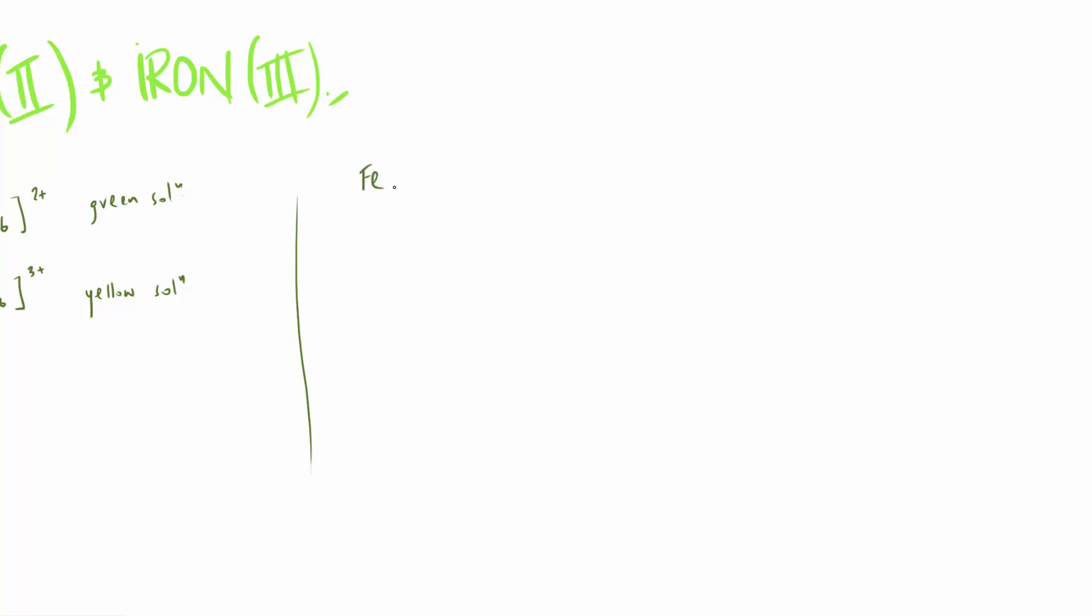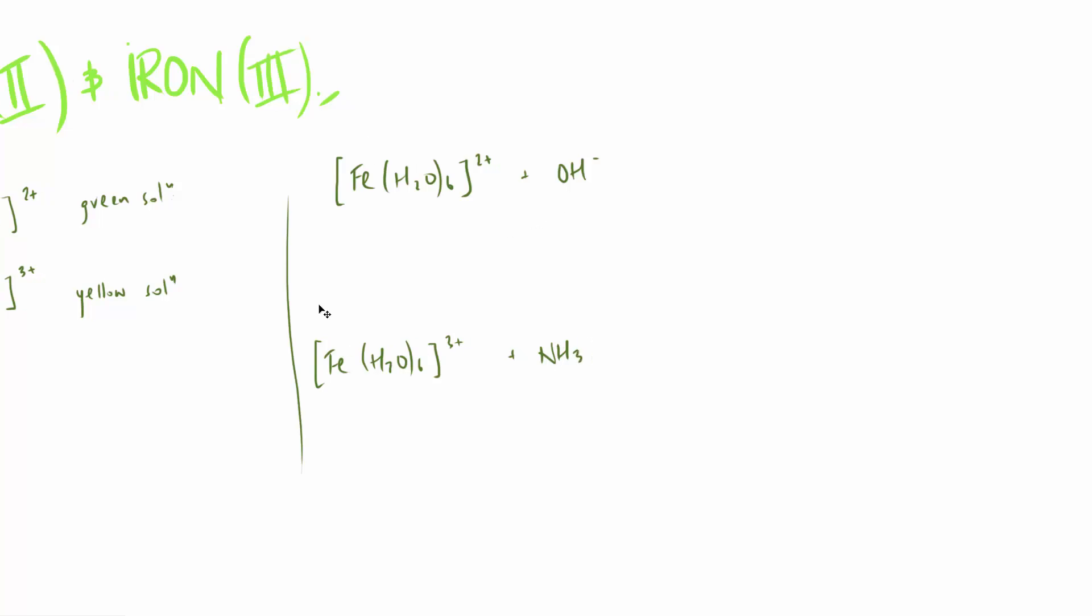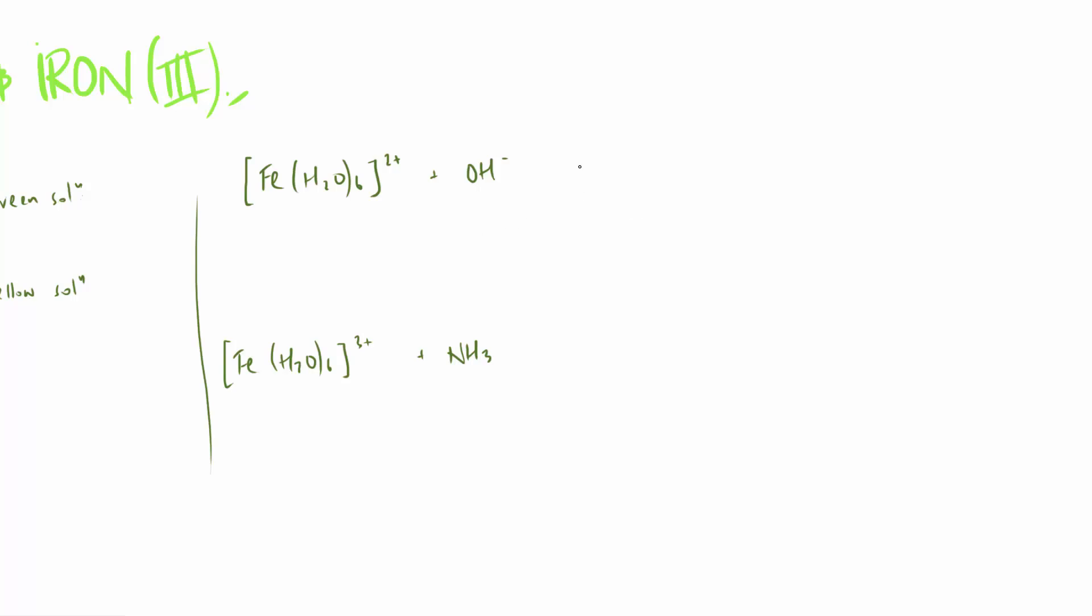I'm not going to write them all out, but we've got Fe(H2O)6 2+, we'll do this one with hydroxide, and I'll do the 3+ with ammonia. This is officially the first video where I've actually done the actual named transition metal 3+ ion. It's very similar to the copper reaction. We're going to end up with Fe(H2O)4(OH)2, and over here we end up with Fe(H2O)3(OH)3.